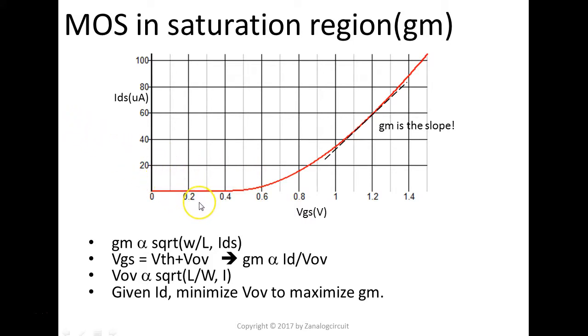We use NMOS as an example here. The threshold of the NMOS is about 0.45. When the VGS is lower than 0.45, as you can see, there's no channel. There's no IDS current. We slowly increase the VGS. The IDS also shows up.